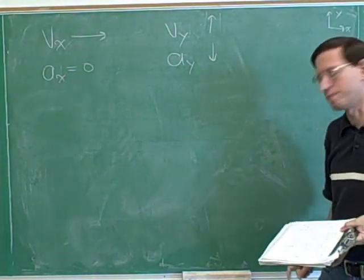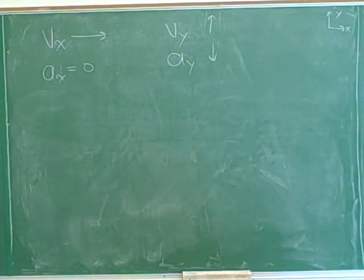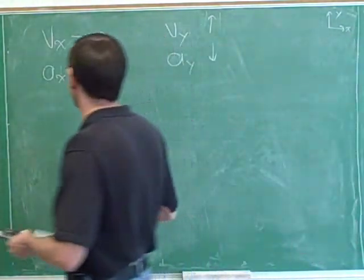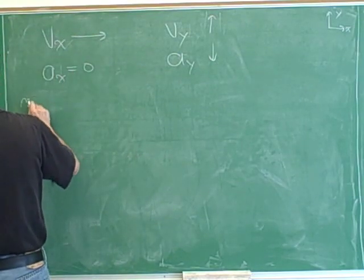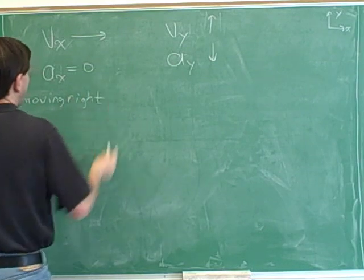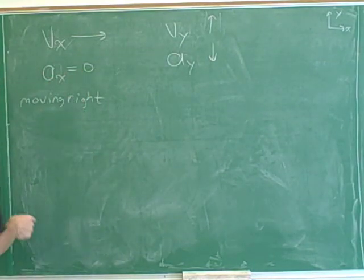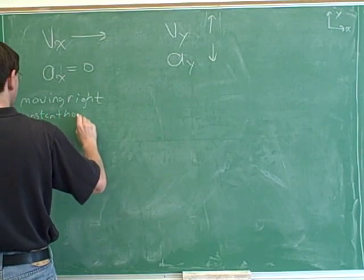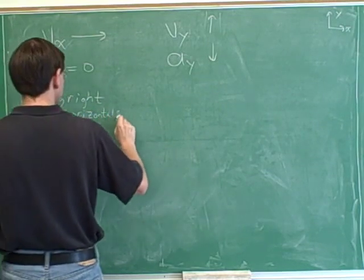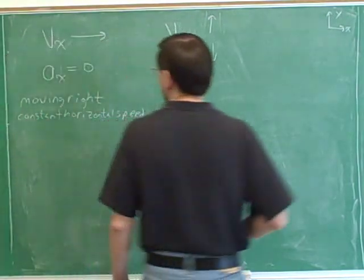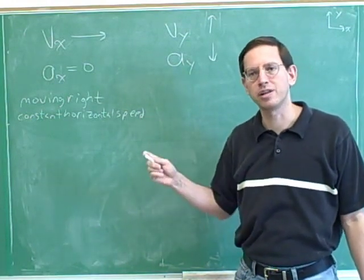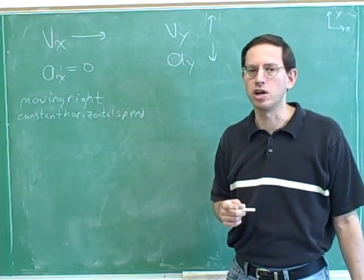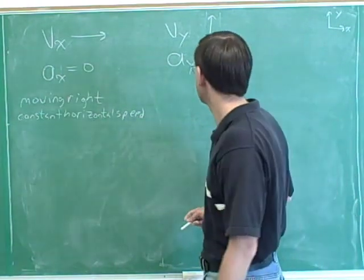Please pause the video and write down everything you can about this object. The key word is separately — we have to think about the horizontal and vertical components separately. Horizontally, the velocity tells us that we're moving right. When the acceleration is zero, you're moving at constant speed; the velocity is not changing. So we have a constant horizontal speed. That's what zero acceleration means.